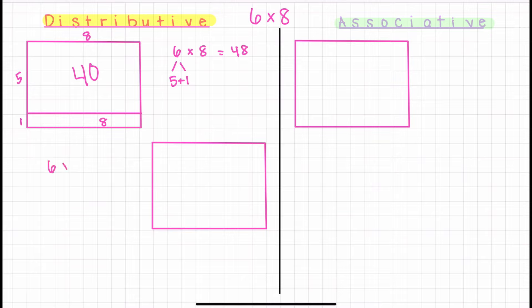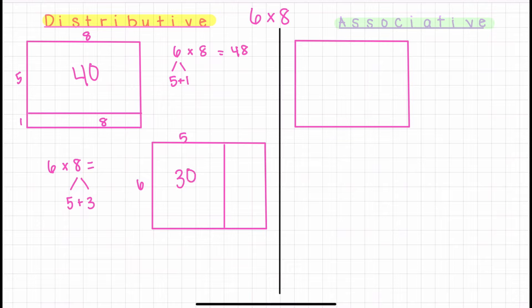There are multiple ways to decompose the eight, but I like getting my five facts in there if I can. So I'm going to decompose it into five and three. Six rows of five gives me 30, and six rows of three is 18, for a total of 48.